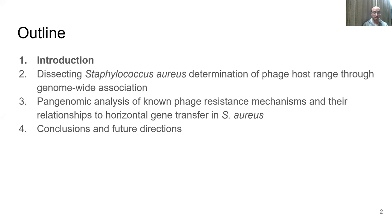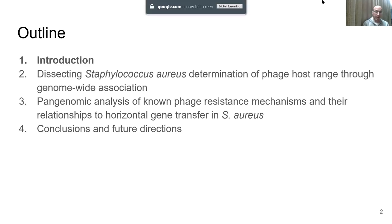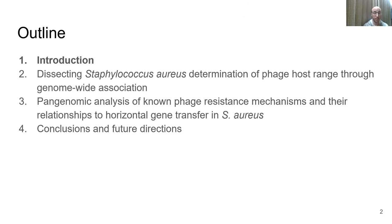I'll start off with an introduction to Staphylococcus aureus and its phages, the first research chapter of my dissertation, in which I perform a genome-wide association study to identify host determinants of Staphylococcus aureus phage host range, a pan-genomic analysis for known phage resistance mechanisms in the species and their relationships with horizontal gene transfer or with empirically determined phage resistance, and finally, wrapping up with conclusions and future directions.